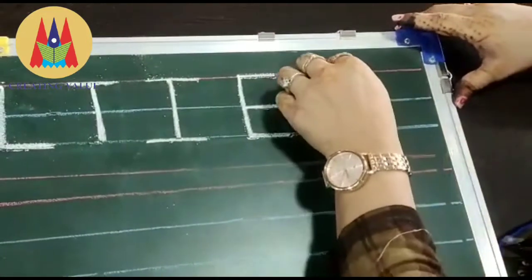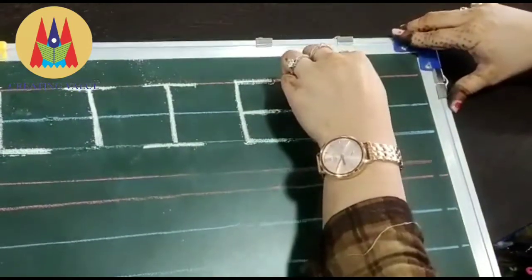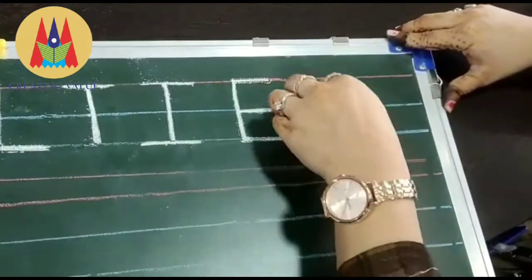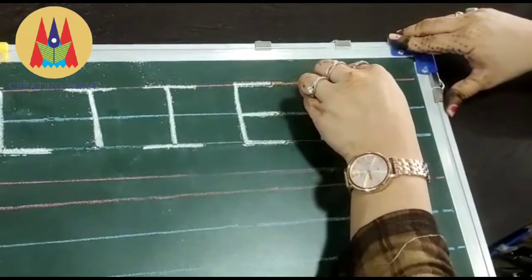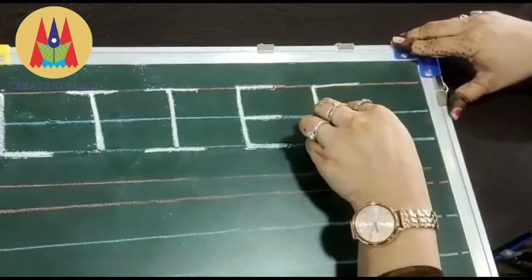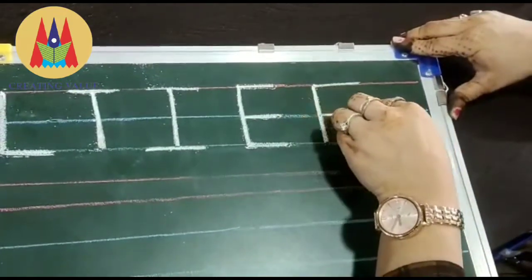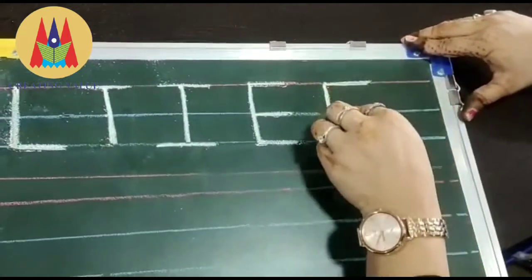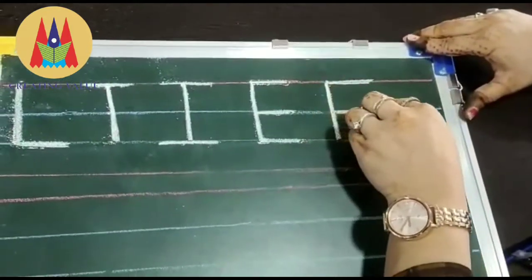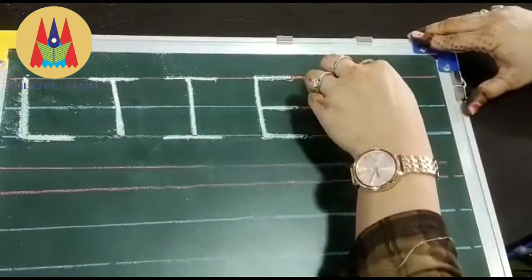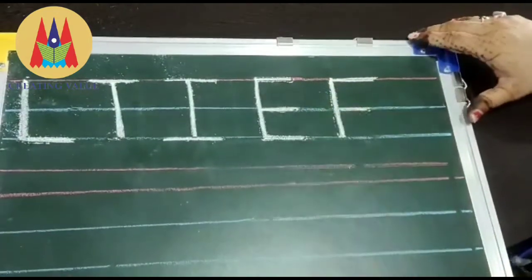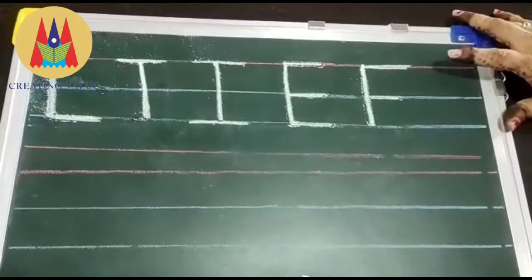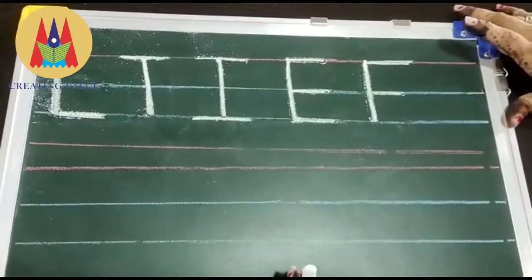Our next alphabet is F. F for fish. Standing line red to blue, then in red sleeping line and in blue sleeping line. The first sleeping line is big and the second sleeping line is small. This is letter F. F for fish, F for flower and F for fan.